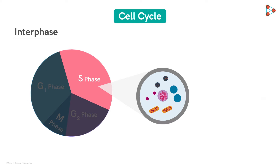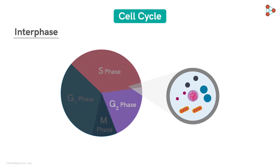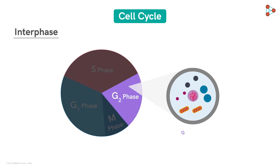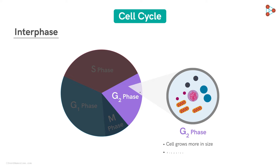The next step in the process of the Interphase is the second gap phase, abbreviated as G2 phase. This phase allows the cell to grow more. Along with the enlargement in cell size, the cell also makes more proteins and organelles. The most important function of this phase is that it prepares the cell for mitosis and the actual cell division in the M-Phase.